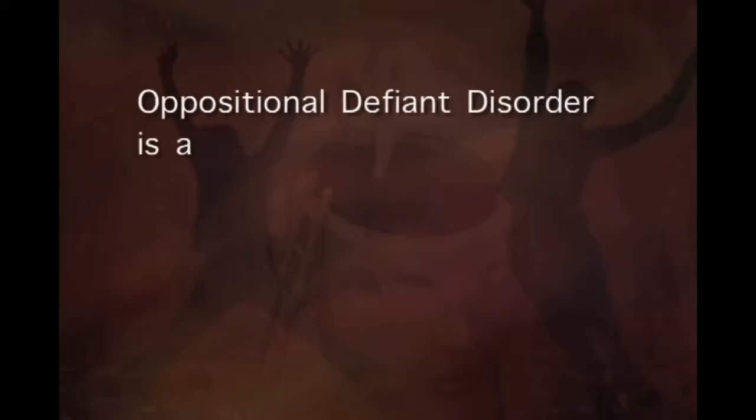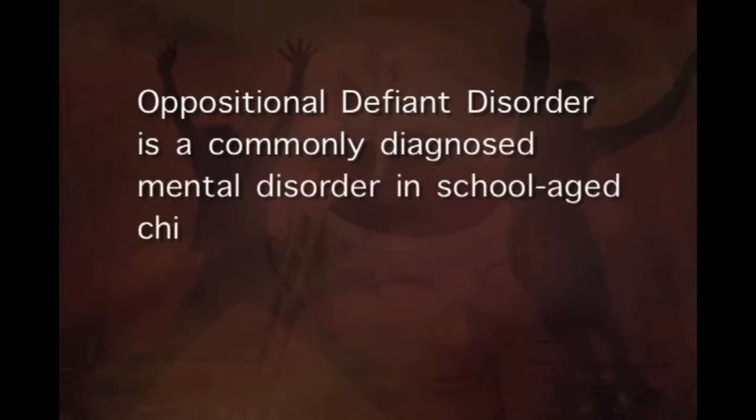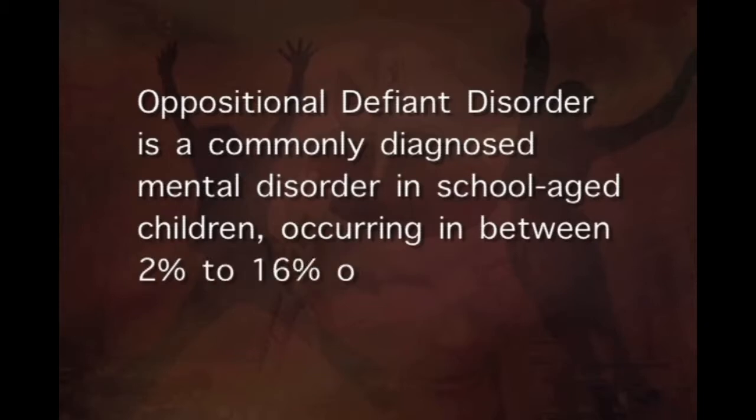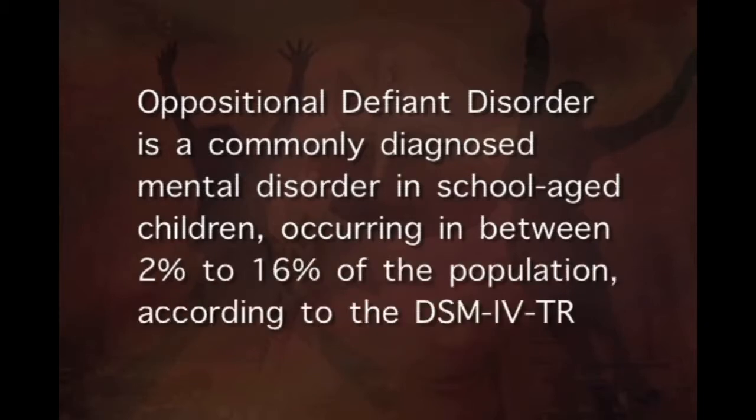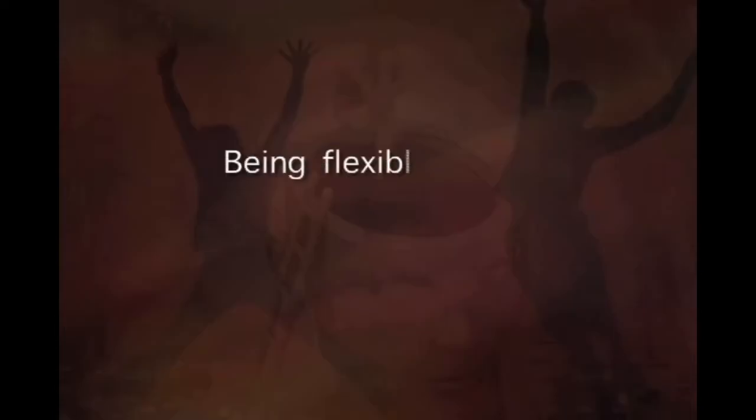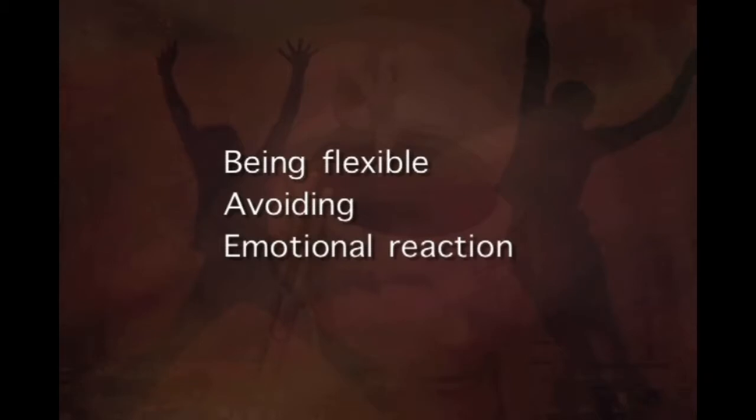Research has found that 10 years after diagnosis, the majority of these children no longer have this disorder. However, if the disorder persists and worsens, it can develop into conduct disorder in adolescence and antisocial personality disorder in adulthood. ODD is diagnosed in 2 to 16 percent of the population according to DSM-4-TR. Treatment is available through cognitive behavior therapy, family therapy, and sometimes medication, though there is no strong evidence supporting medication use.